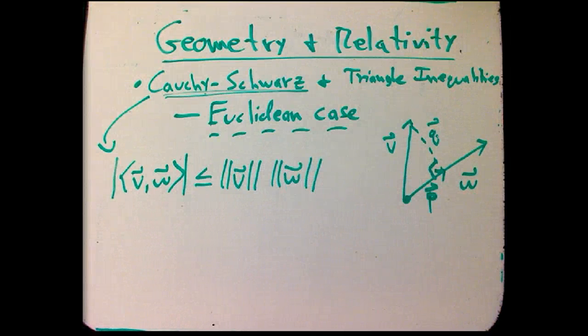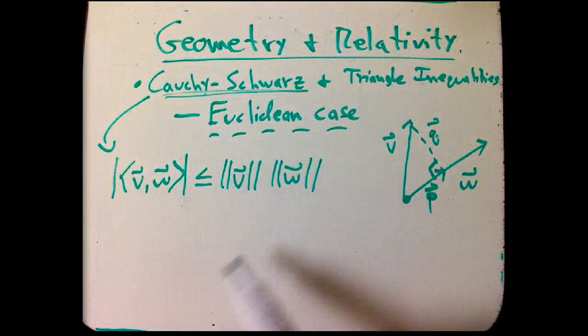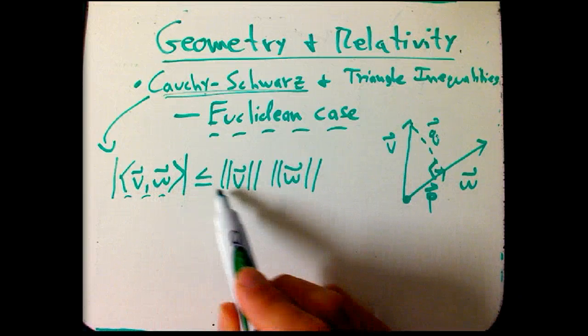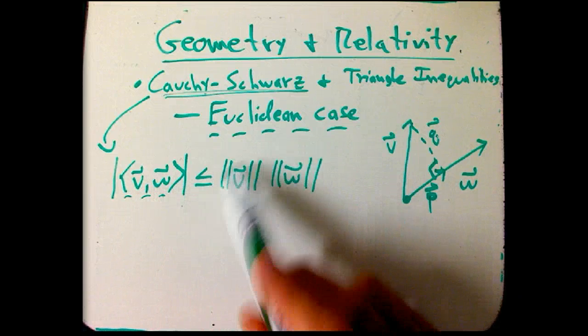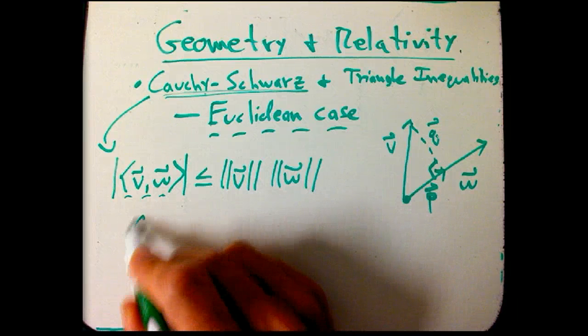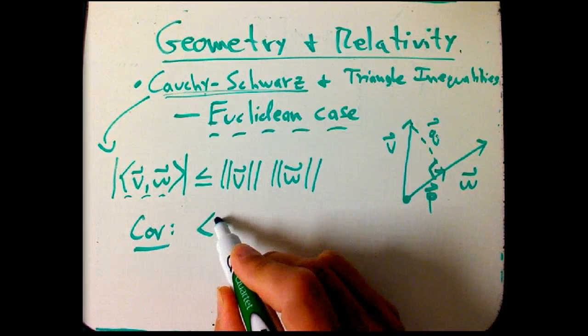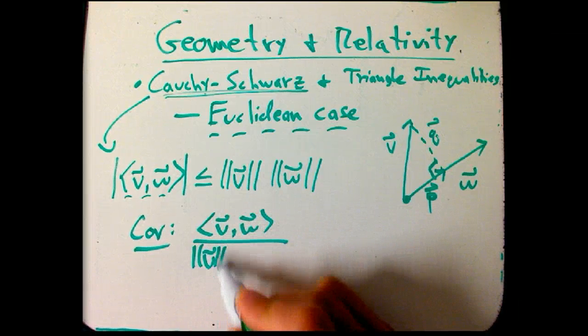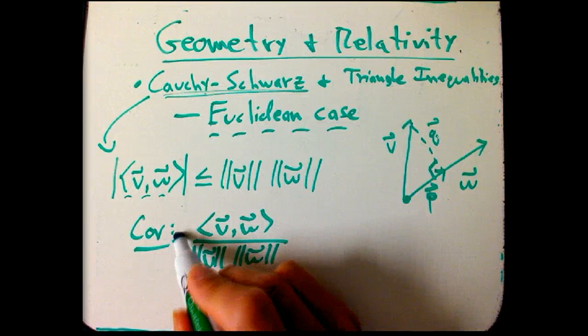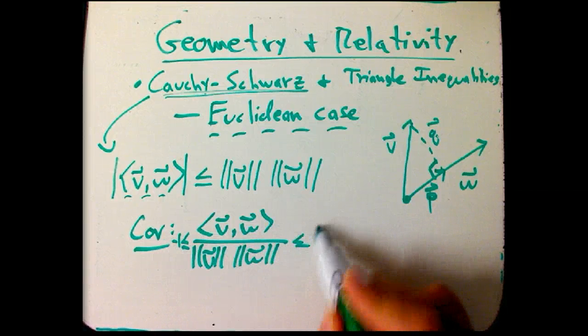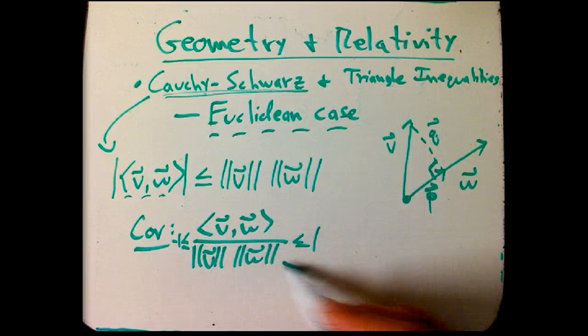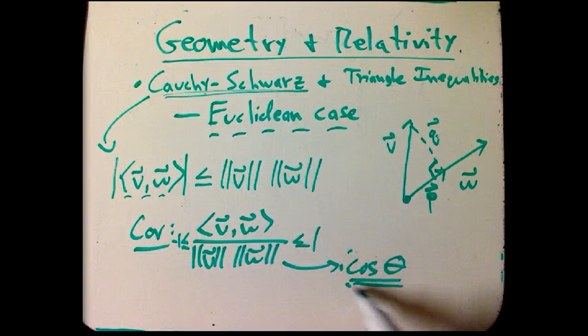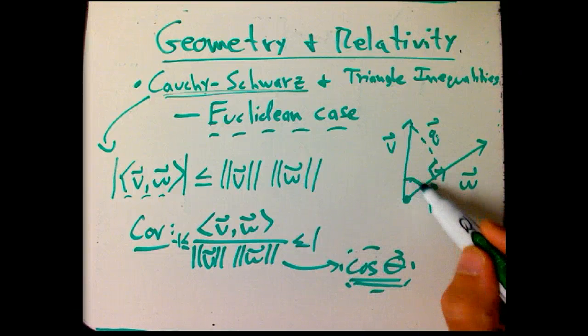One consequence of that in the Euclidean case is that if you take the scalar product and divide by the product of the magnitudes, that's between minus 1 and 1. So a corollary is that this quantity, which you've seen before, at least briefly, is between minus 1 and 1, so in other words, it could be equal to the cosine or sine of something. In fact, there's really good reasons why it's cosine of the angle between them.